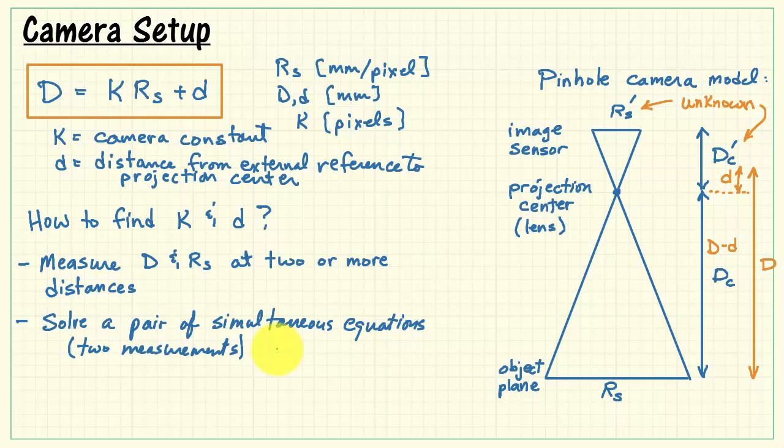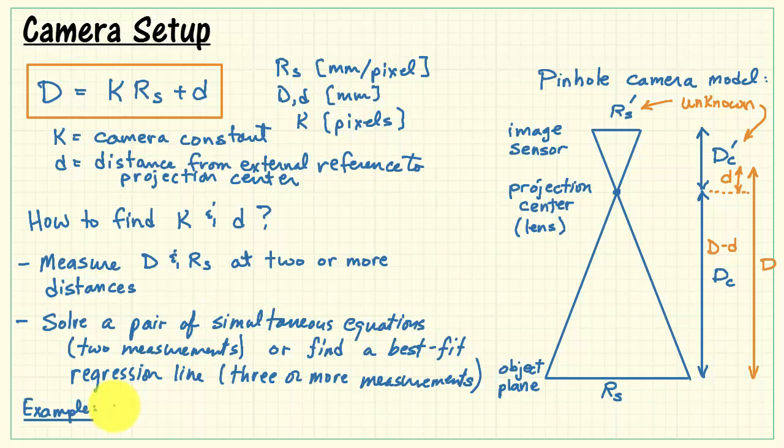How do we find these values? Well, we can measure the camera distance and the spatial resolution at two or more distances. We either solve a pair of simultaneous equations or find a best fit regression line.